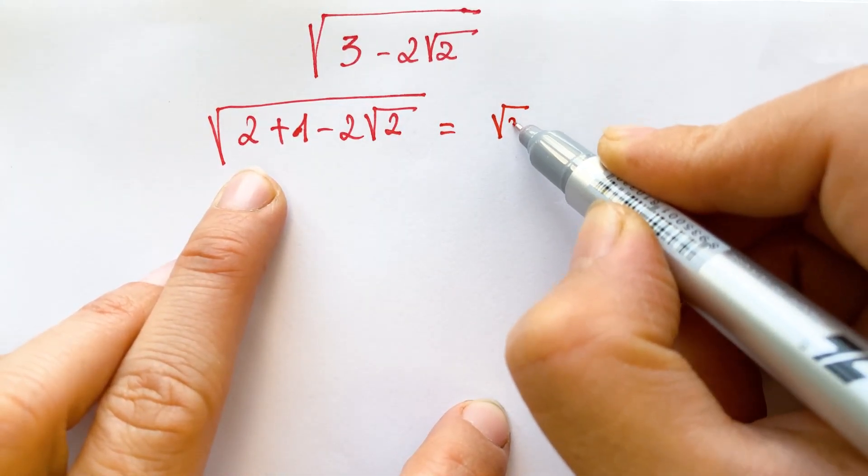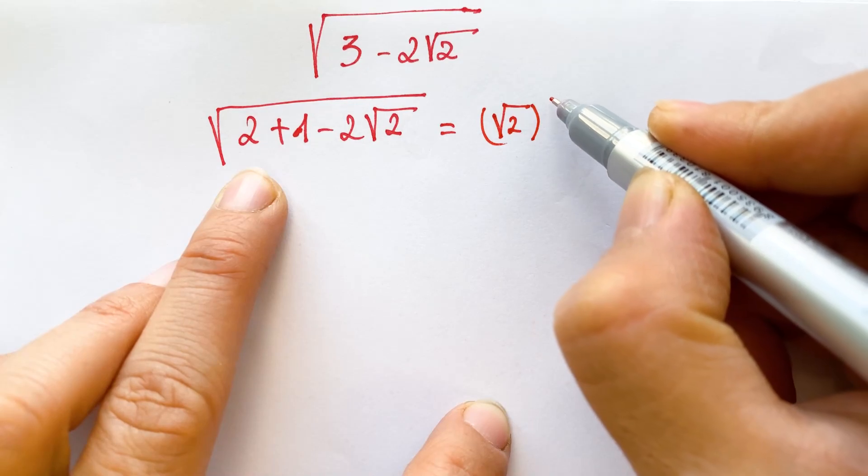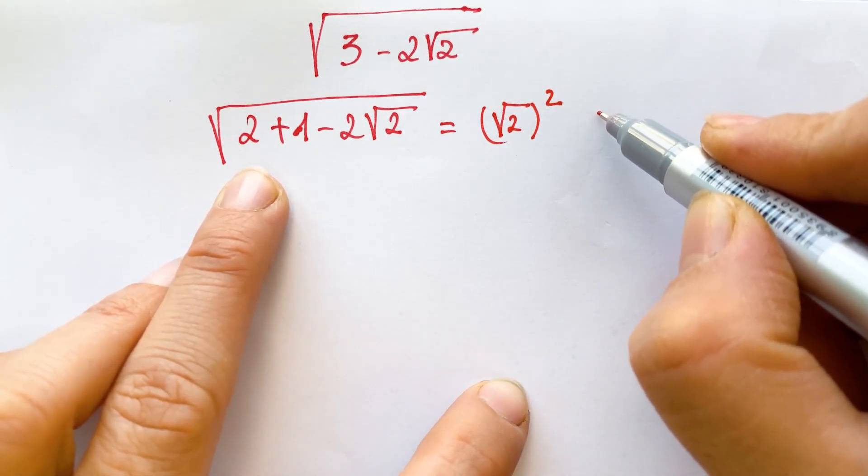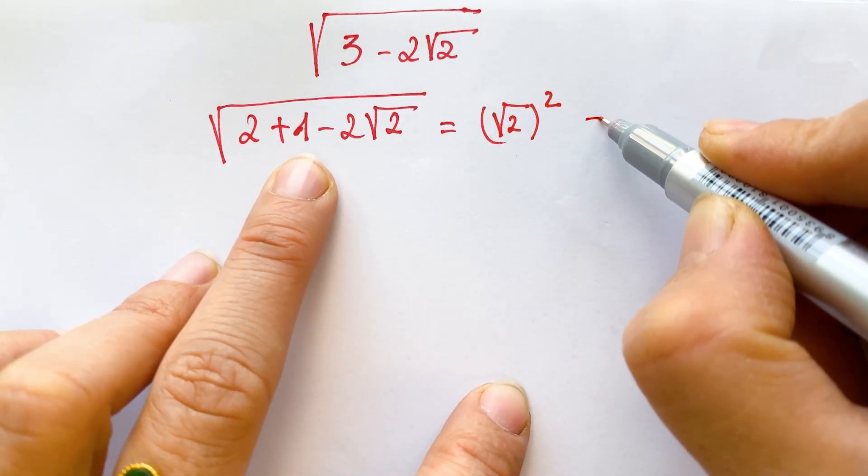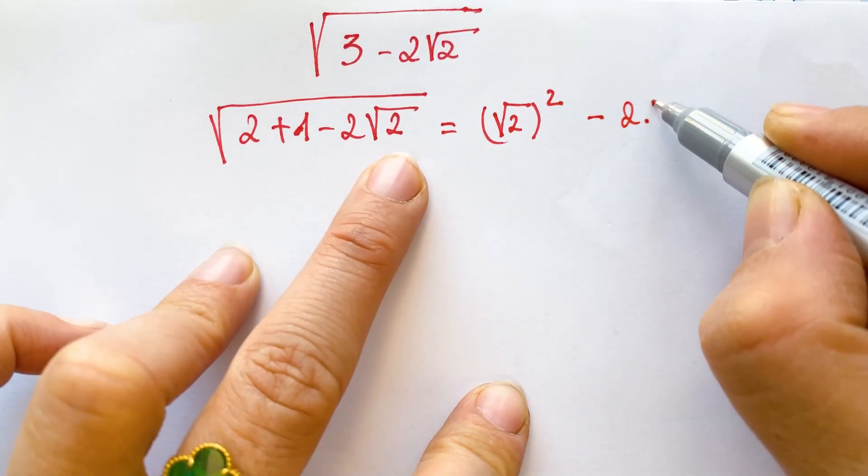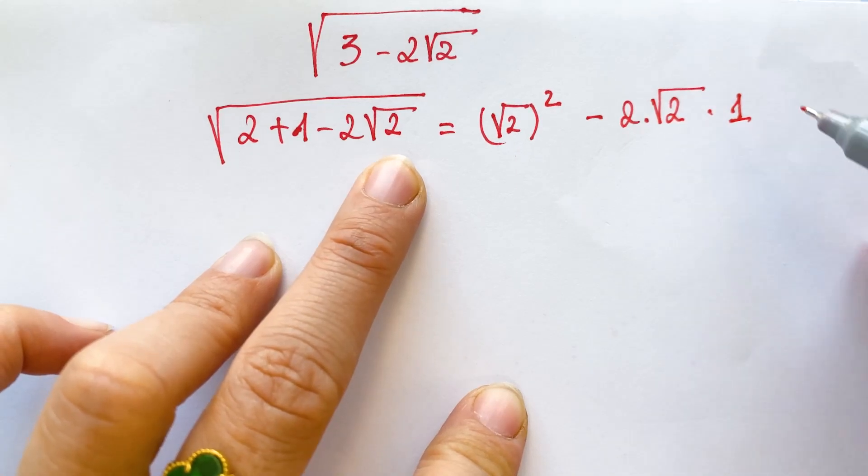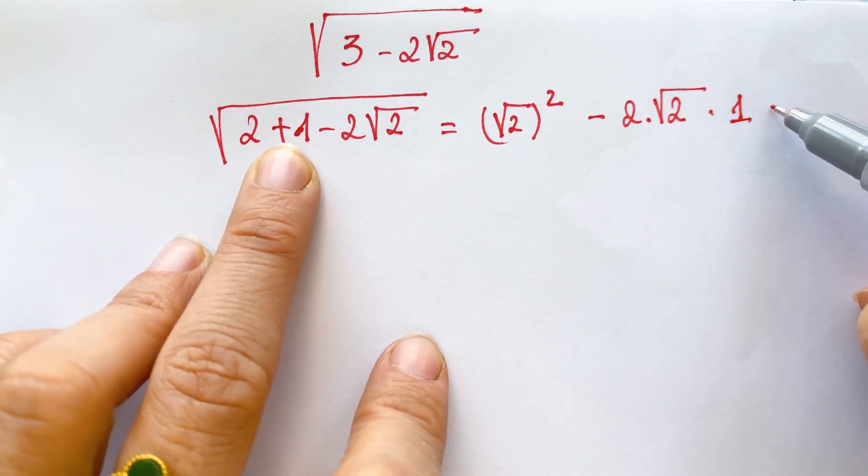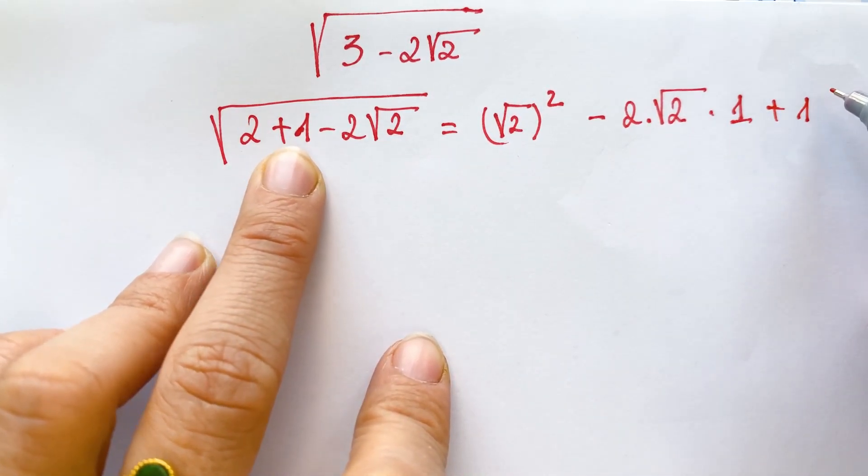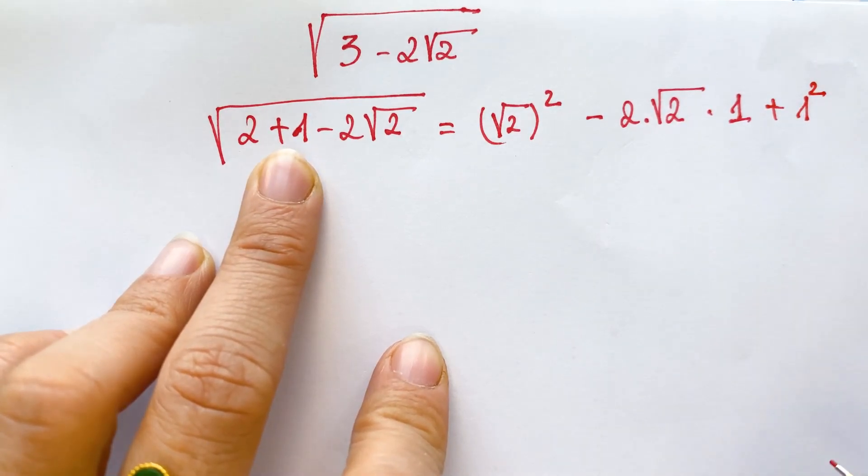You can rewrite square root two whole power square. And next, minus two times square root two times one. And next, you can write plus one equals one square.